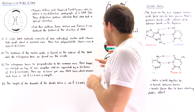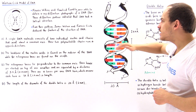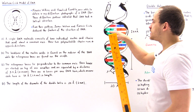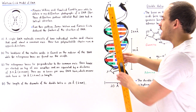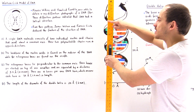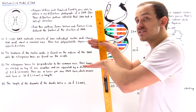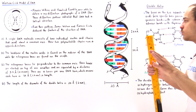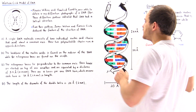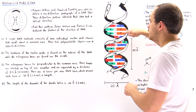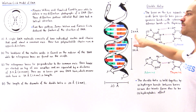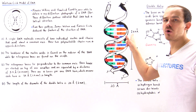Point number three: these bases are essentially perpendicular with respect to the common axis. If this is the common axis, the bases are at a 90-degree angle with respect to it. This allows for the stacking of the bases on top of one another. The distance between any two base pairs is 3.4 angstroms, or equivalently 0.3 nanometers.